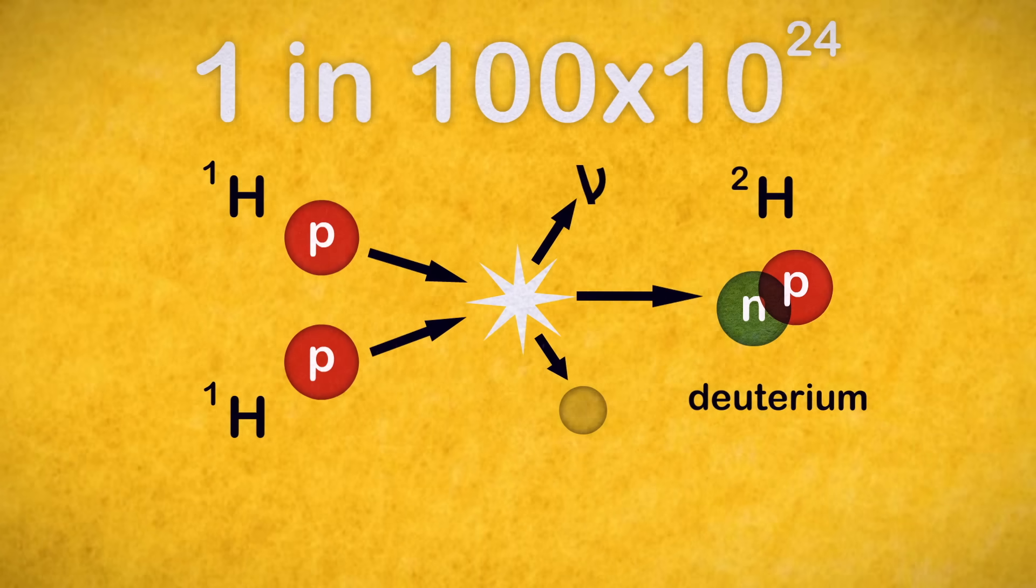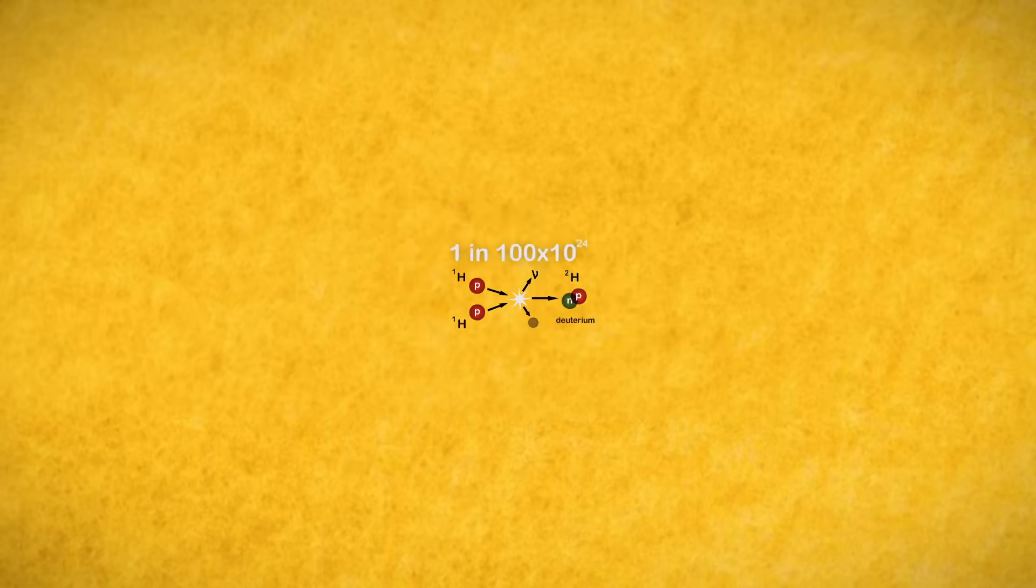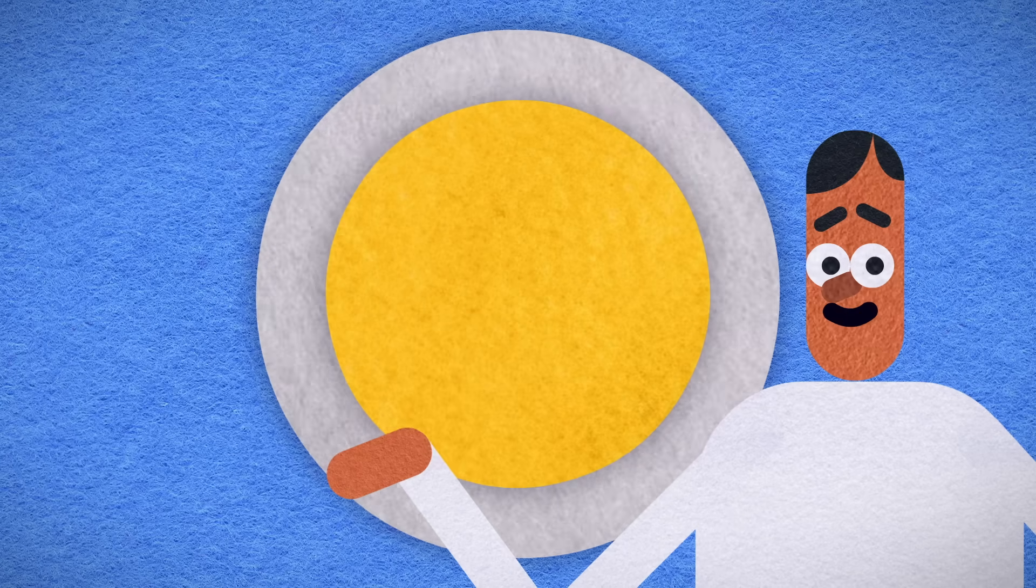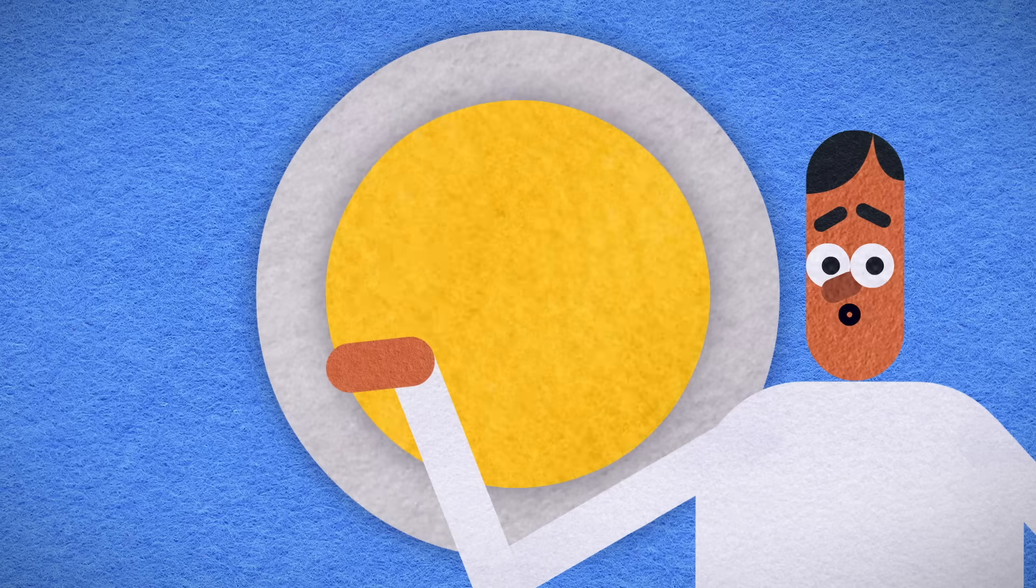Only one in a hundred septillion collisions between protons results in a deuterium nucleus. In the Sun, this isn't a problem because there are so many protons that even a reaction this rare happens all the time.